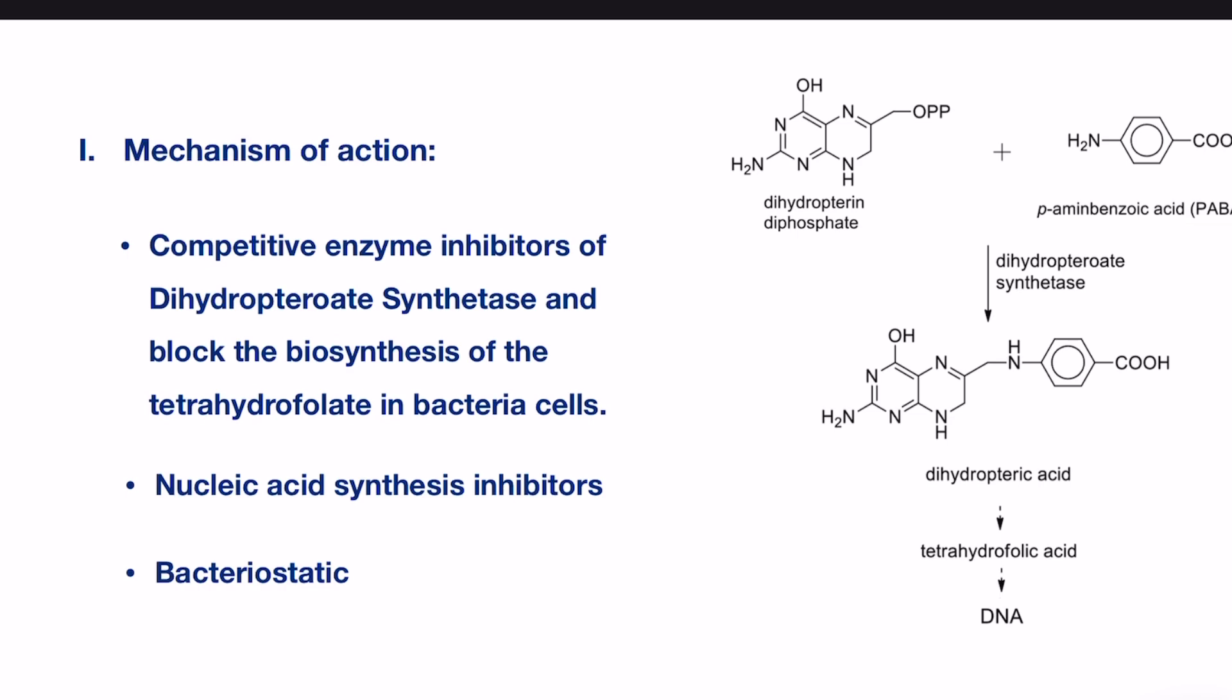This figure here shows the biosynthesis of nucleic acid in bacteria. At the very beginning, the dihydropteroate synthetase combines two molecules, which are dihydropterin diphosphate and para-aminobenzoic acid, or PABA, to form dihydropteroic acid, which is a precursor of tetrahydrofolate.